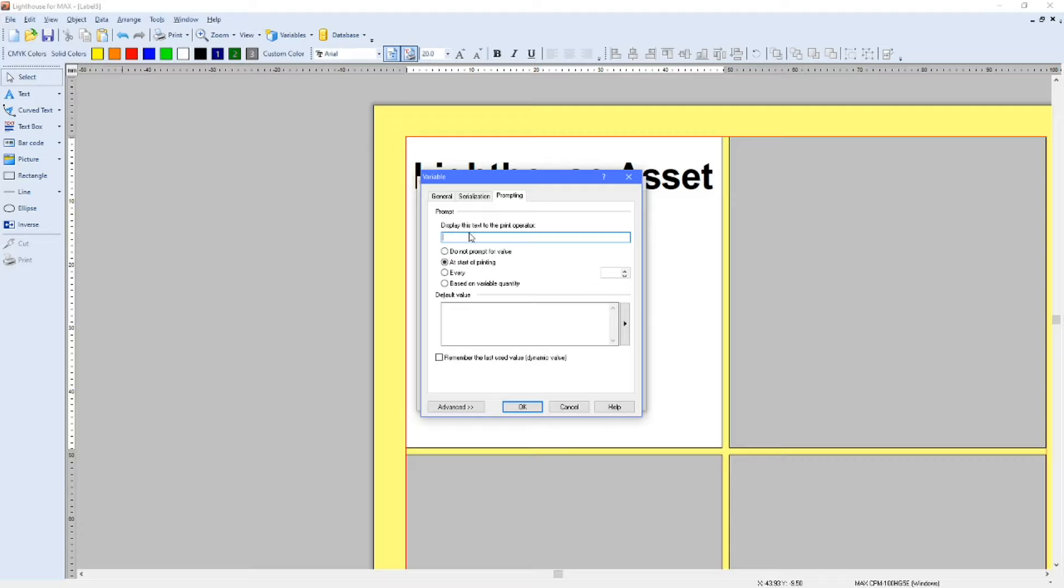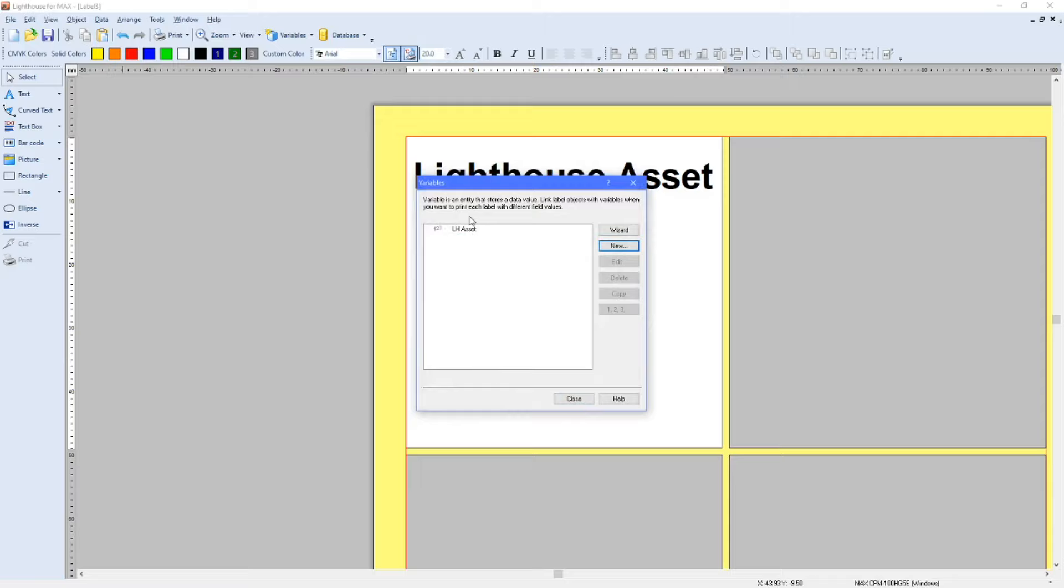And prompting. This is, when you go to print, it'll actually remind you to do something, prompt to do something. If I just put enter starting asset number, and it should default to that started printing, so you want to keep it as that. Okay, so you can see it appears there.